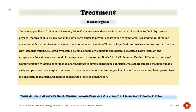Cryotherapy — 15 to 20 minutes of ice every 30 to 60 minutes — can decrease intramuscular blood flow by 50 percent. Aggressive physical therapy should be avoided in the very early stages to prevent exacerbation of symptoms. Assisted range of motion exercises within a pain-free arc of motion may begin as early as 48 to 72 hours. A gradual progressive exercise program begins with isometric training, followed by isotonic training, and finally isokinetic and dynamic exercises. Large fluctuant and symptomatic hematomas may benefit from aspiration. In more mature lesions, active range of motion and resistive strengthening exercises are important to maintain and improve joint range of motion and function.